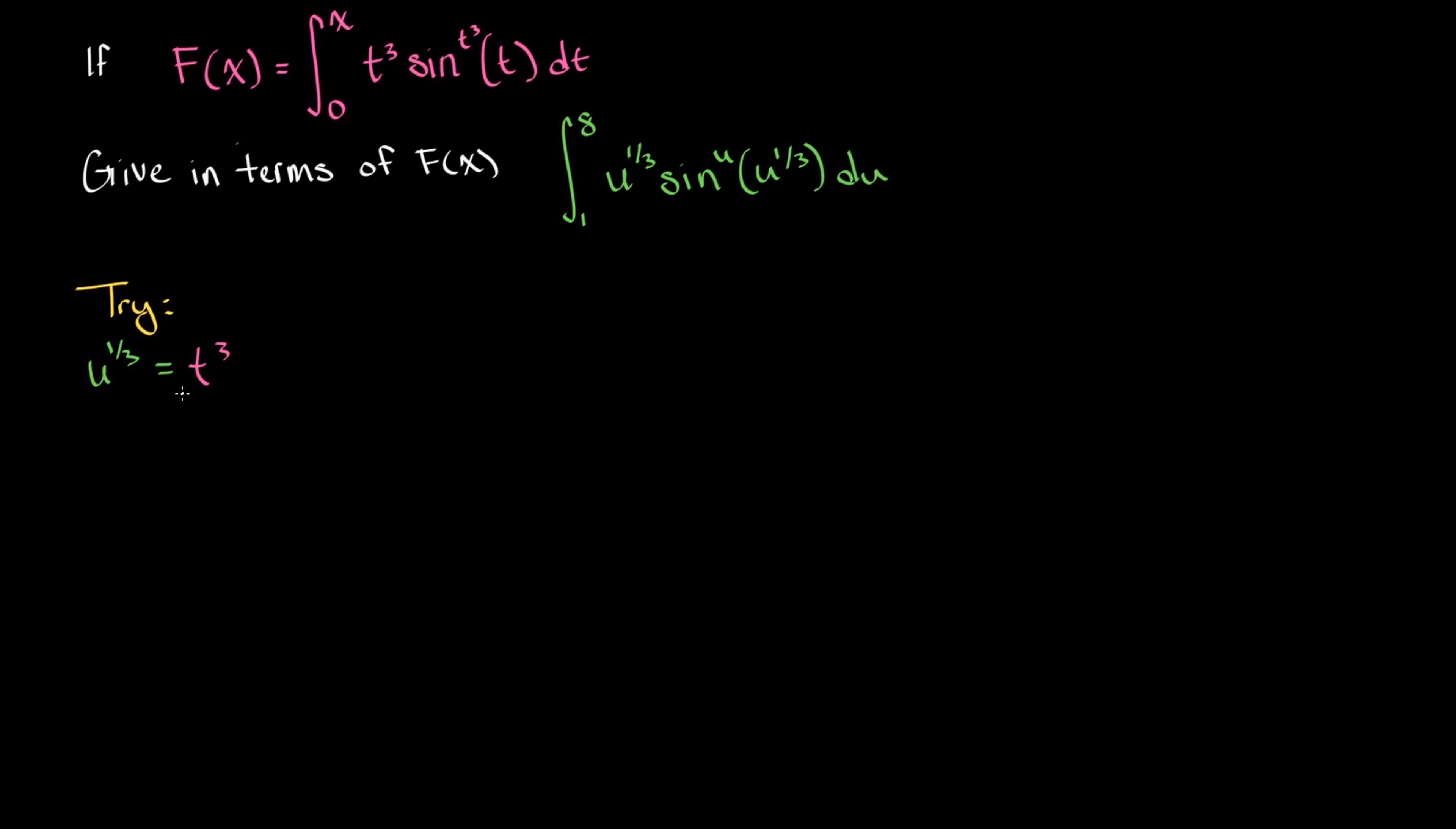What would happen under that change of variables? Similar to what you've learned with u-substitution so far, you're going to differentiate both sides. So you have one-third times u to the negative two-thirds power times du, and this is equal to 3t squared dt. So this is what you would have.